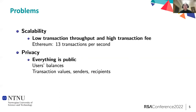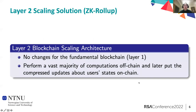For scalability, there is a popular approach called Layer 2 scaling solution. The idea is that they don't want any change for the fundamental blockchain layer — no change for the consensus algorithm, no change for the block size. They also want to perform the vast majority of computation off-chain and later put compressed updates about these computations or user state on-chain.